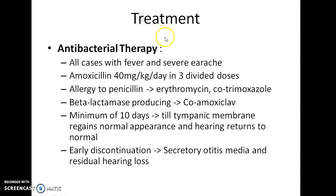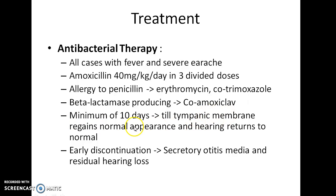How do you treat a case of acute suppurative otitis media? Antibacterial therapy is indicated in all cases with fever and severe earache. The drug of choice is amoxicillin 40 mg per kg per day in three divided doses. In cases of allergy to penicillin, erythromycin or cotrimoxazole can be preferred. In beta-lactamase producing strains, co-amoxiclav is prescribed. The antibiotic therapy should be given for a minimum of 10 days, until the tympanic membrane regains normal appearance and hearing returns to normal. Early discontinuation can lead to secretory otitis media and residual hearing loss.